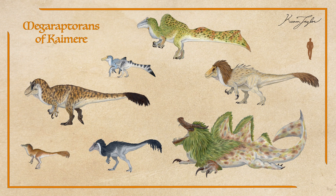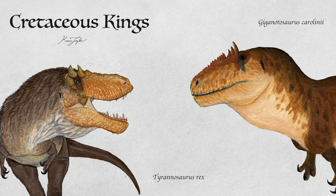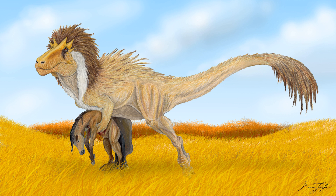Although the Megaraptorans that fill the role of top predators in the known world are not close relatives of T. rex, Giganotosaurus, and Torvosaurus, their body plan is similar to those real fossil taxa, as many different theropod lineages with strikingly different ancestors produced similarly proportioned animals once they evolved into 40-foot apex predators. I reasoned that if it happened to Tyrannosaurs, Carnosaurs, and Megalosaurs, why not Megaraptorans?